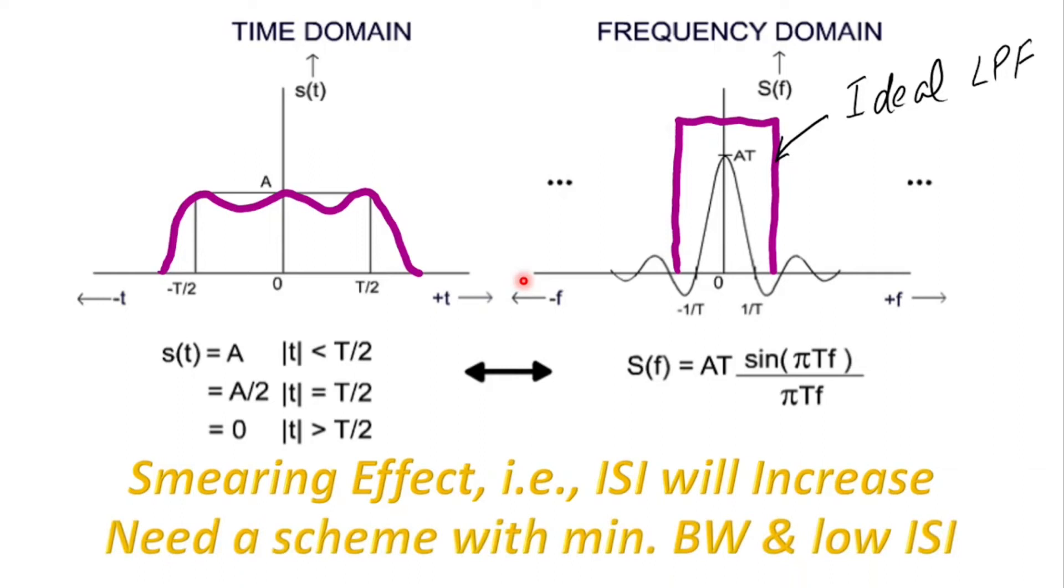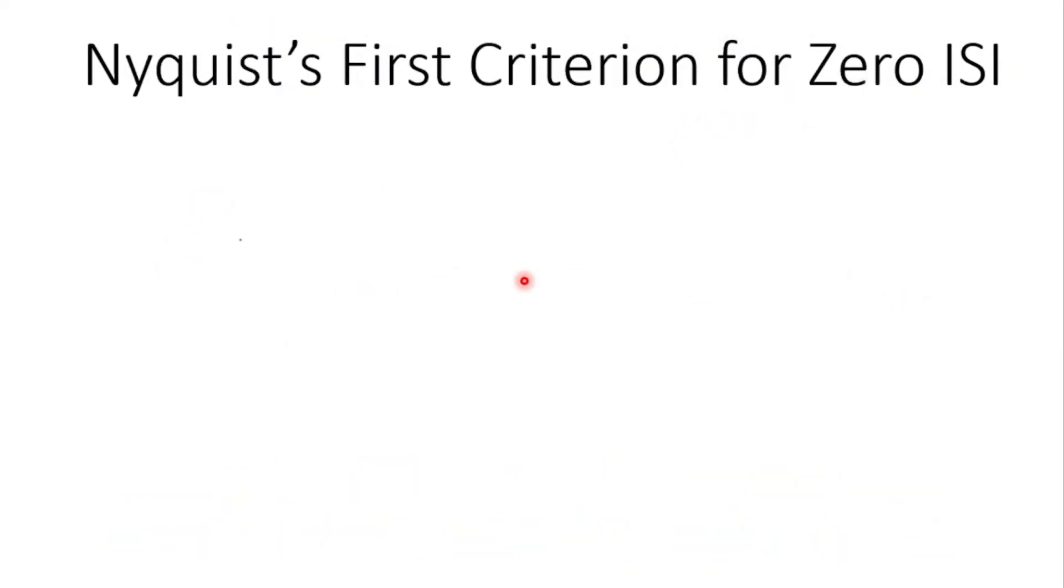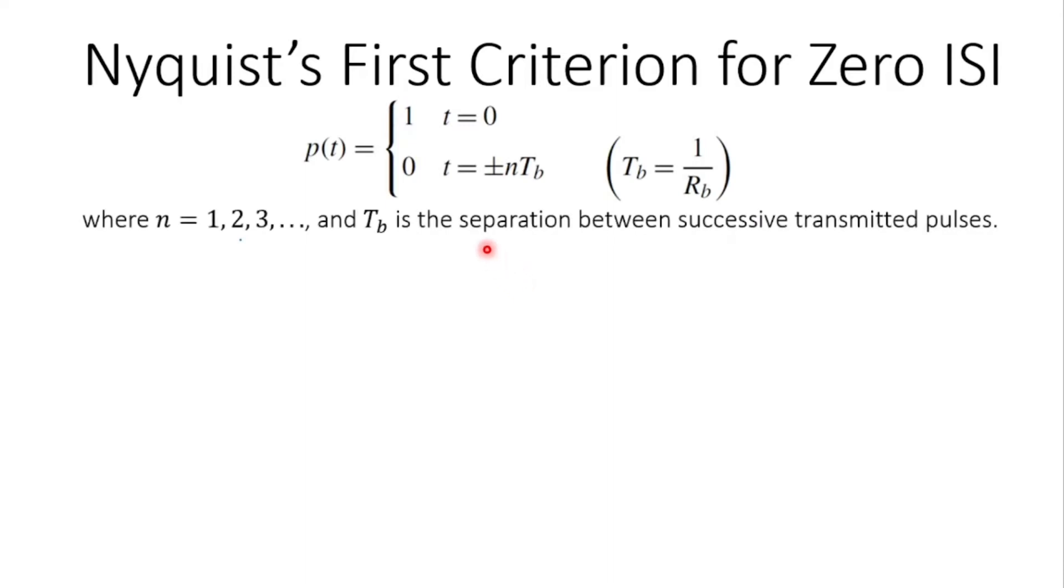Therefore we need a scheme which ensures minimum bandwidth with zero or very low ISI. So this brings us to the scheme which is proposed by Nyquist and it states that for zero ISI the signal pulses p shall have a value of 1 at t equal to 0 and it shall have a value of 0 for integer multiples n of Tb where Tb is the separation between successive transmitted pulses.